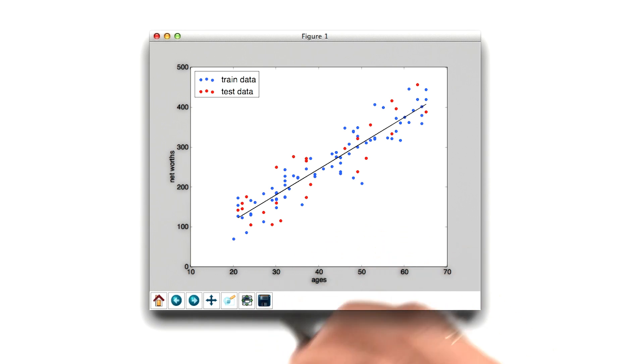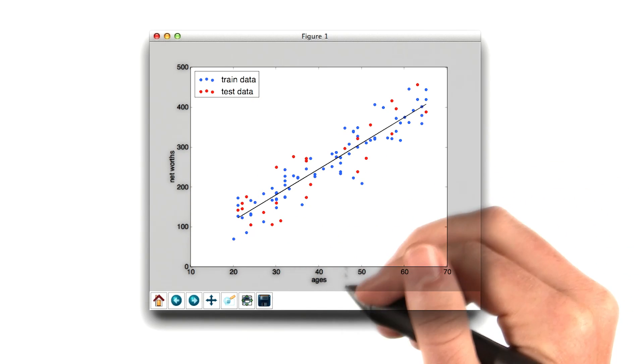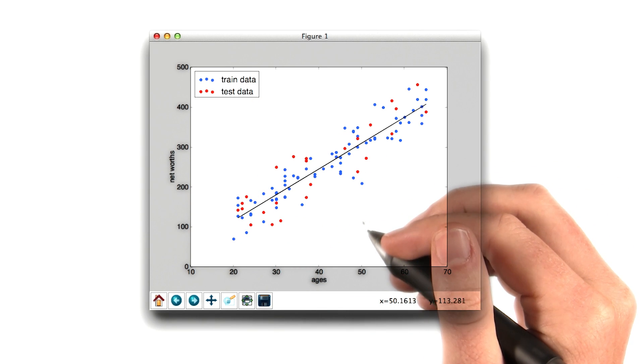And this is what you should get once you've performed your regression. In this scatterplot, I now have the training data, but I also have the testing data, which I've colored in red so you can distinguish the points.